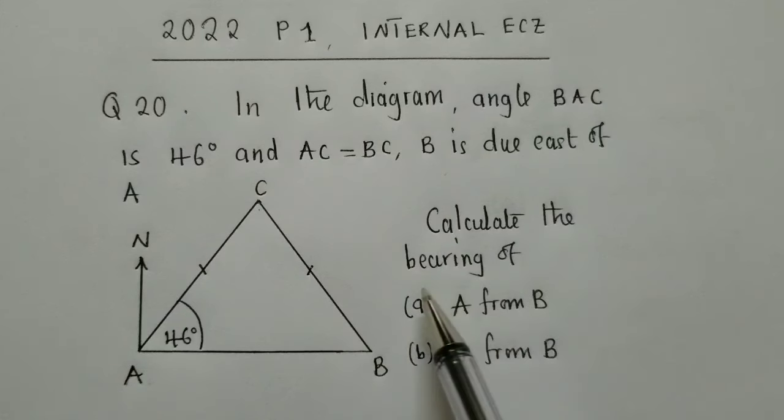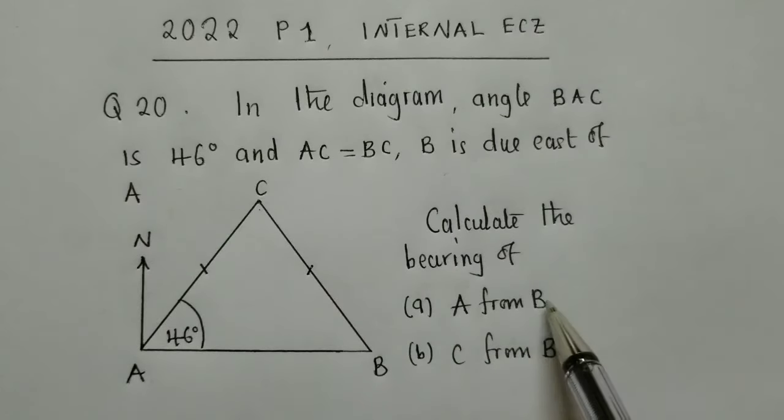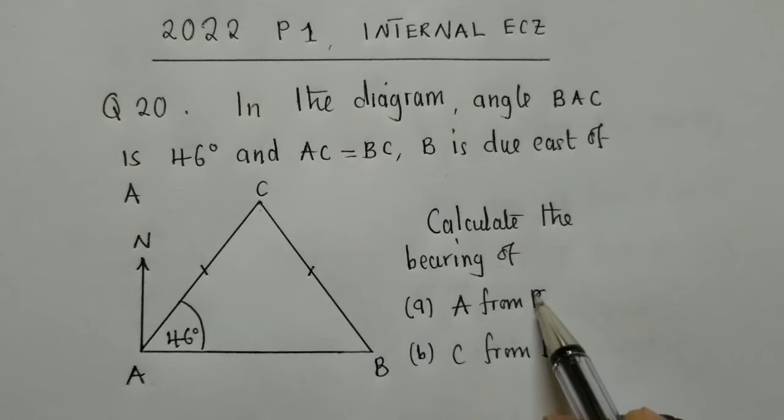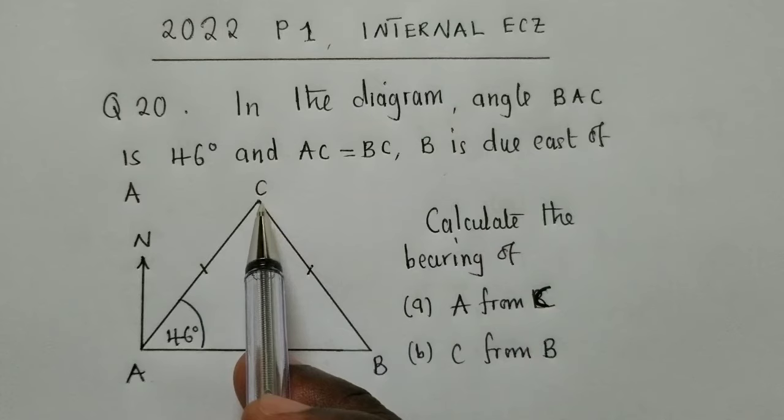Now they're saying calculate the bearing of A from B. So, A, I mean A from C, sorry. It's supposed to be A from C. This is C. A from C.